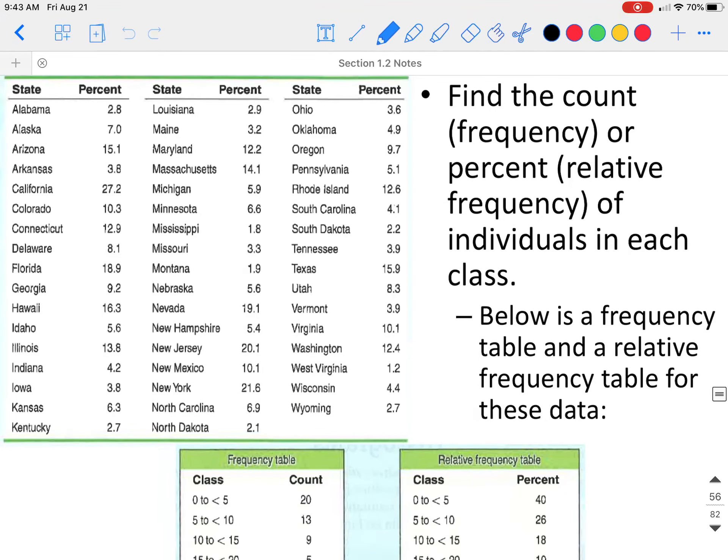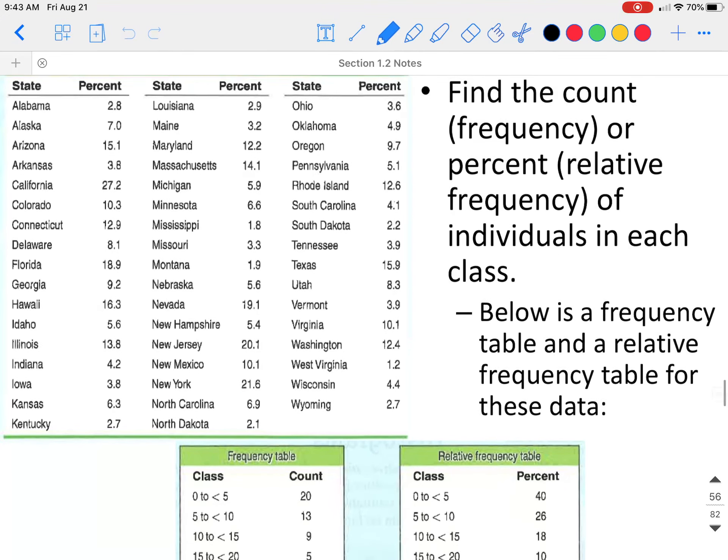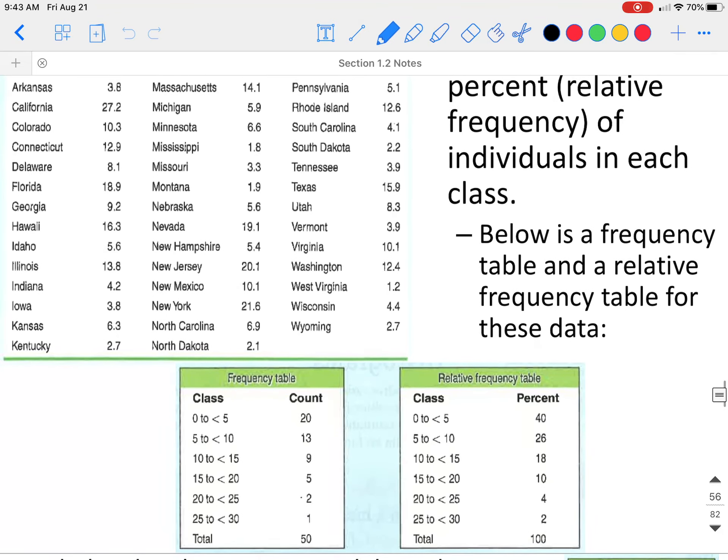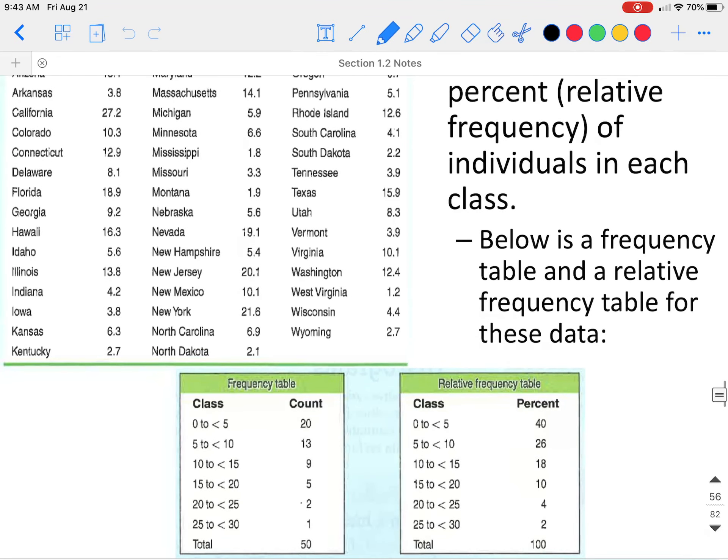You would then go through and count the frequency that this occurs. In this table, there are 20 times that a data value is between 0 and 5. There's 13 times it's 5 up to 10, 9 times from 10 up to 15, from 15 up to 20 we have 5 times and so on and so forth.